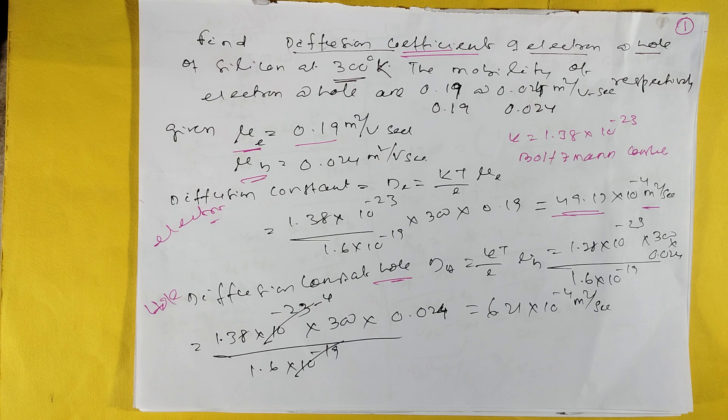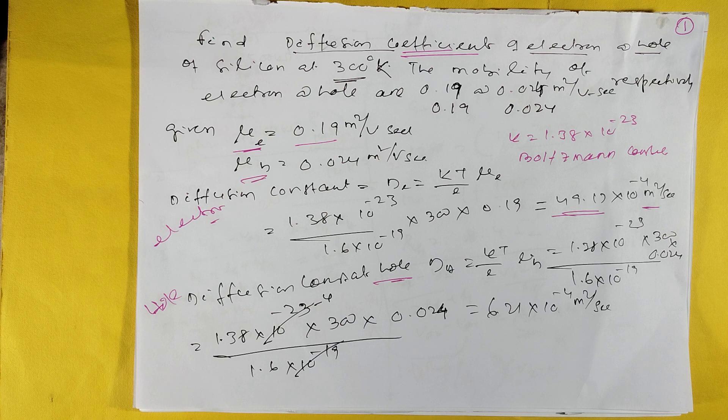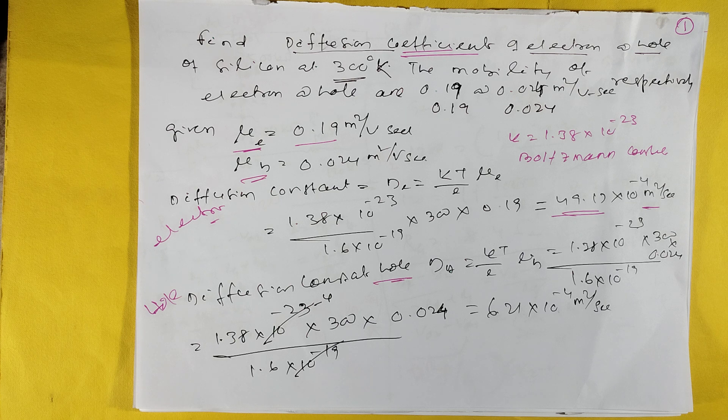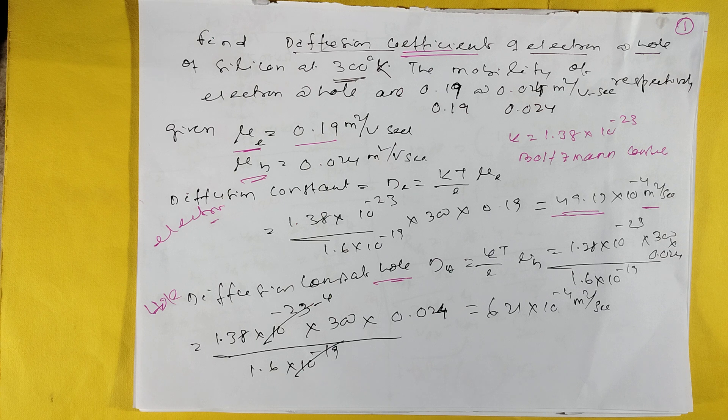You have to find the diffusion constant of hole and electron. Mobility is given. Diffusion constant is D = (KT/E) × μE, where μE is mobility. K = 1.38 × 10^-23, E = 1.6 × 10^-19, temperature is given as 300K absolute.